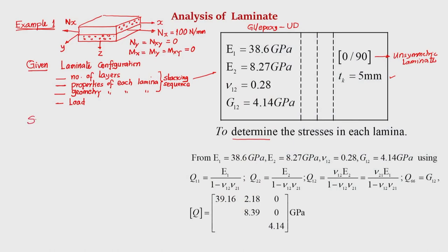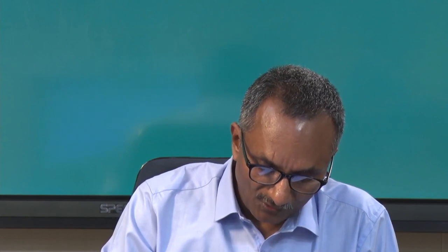Step one: obtain the reduced stiffness matrix Q for each lamina from E1, E2, ν12, and G12. Since both layers are made of glass epoxy, the reduced stiffness matrix will be the same for both. However, for hybrid laminates where each lamina is a different material, Q would differ per layer. We calculate the reduced stiffness matrix for this unidirectional glass epoxy lamina accordingly.